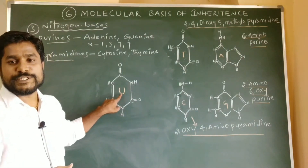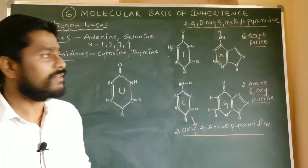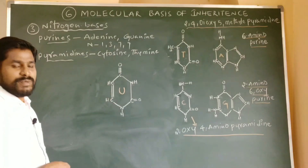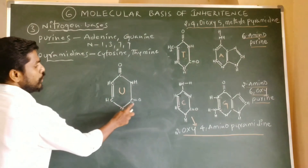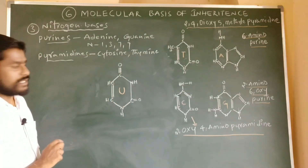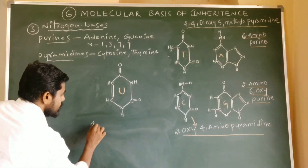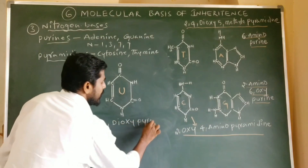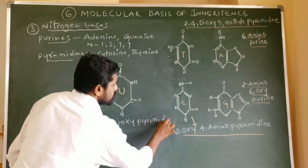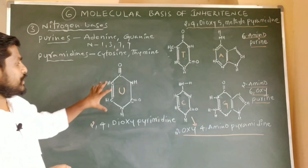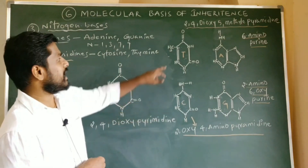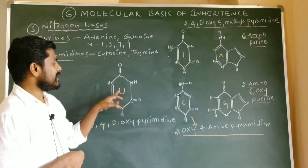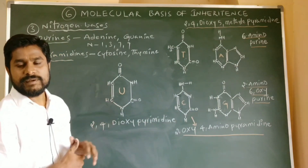Along with these two pyrimidines, there is one more pyrimidine called uracil, which is present in RNA in the place of thymine. According to IUPAC, the scientific name of uracil is 2,4-dioxypyrimidine. The basic difference between uracil and thymine is that thymine has a methyl group at the fifth position, whereas uracil lacks that methyl group.